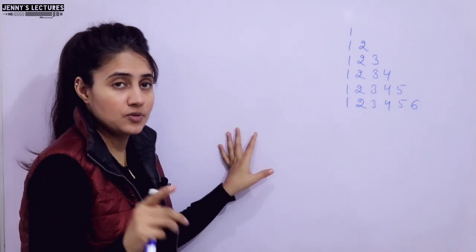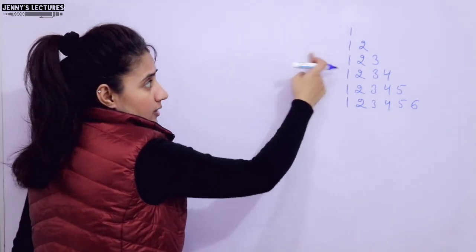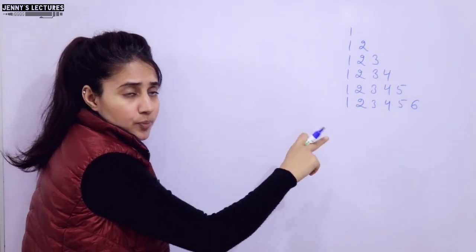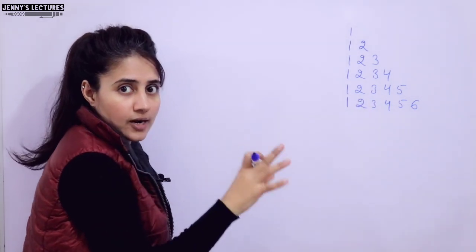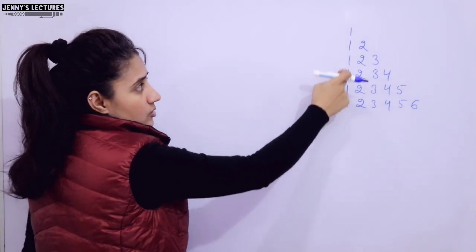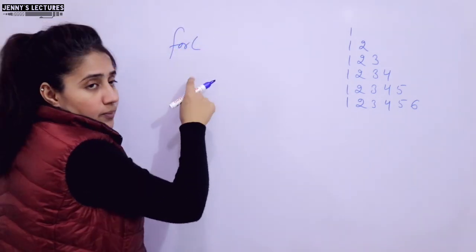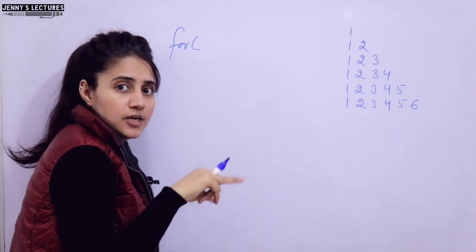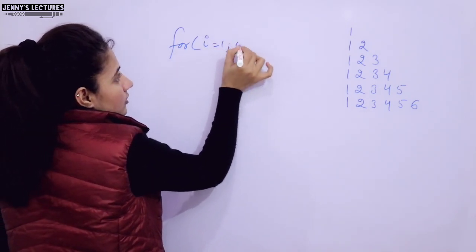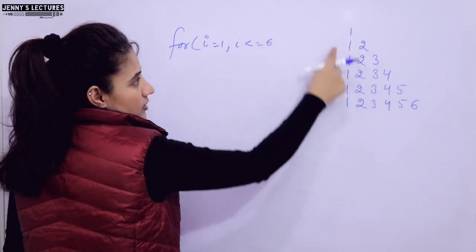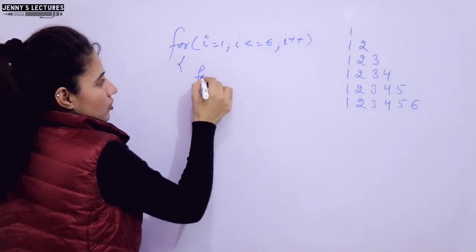First we will discuss the logic on the board, then I will show you the output on VS Code. We require two loops: one for the number of lines (rows) and a second for the number of columns — the actual values we print. The outer for loop handles the number of lines. Since there are six lines, the outer loop should run six times.